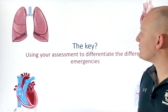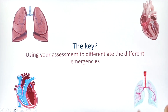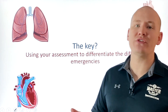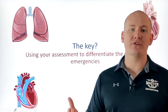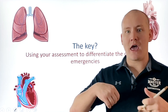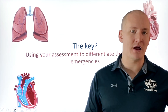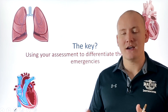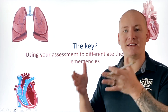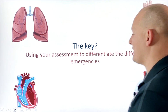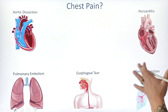The key to identifying these emergencies is to use your assessment to differentiate between them. We're going to talk about using your differentials, your history, and your assessment to identify subtle differences in things like aortic rupture, esophageal rupture, and pericarditis — so we can identify them early and start treating them early.